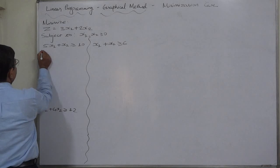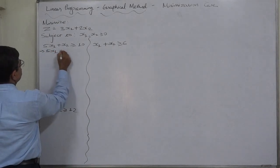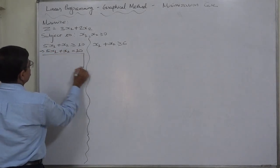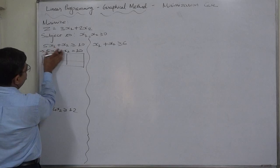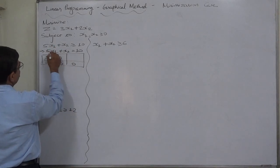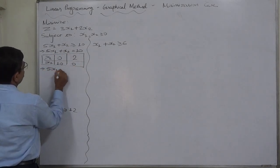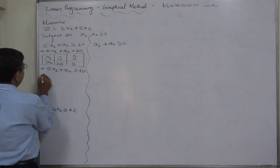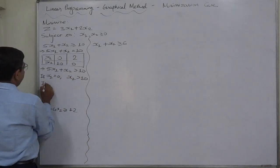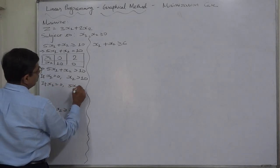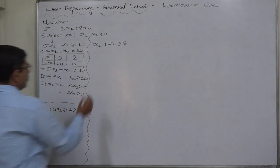Let's segregate the first constraint into equality and inequality. For 5x1 plus x2 equals 10: if x1 is 0, then x2 equals 10; if x2 is 0, then 5x1 equals 10, so x1 equals 2. For the inequality part, 5x1 plus x2 greater than 10: if x1 is 0, x2 is greater than 10; if x2 is 0, then x1 is greater than 2.